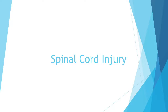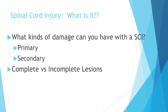The final part in our intracranial regulation is going to be spinal cord injury. What kinds of damage can you actually have with spinal cord injury? You have primary versus secondary. Primary is going to be the result of that initial trauma, and usually any damage done is going to be permanent in the primary.